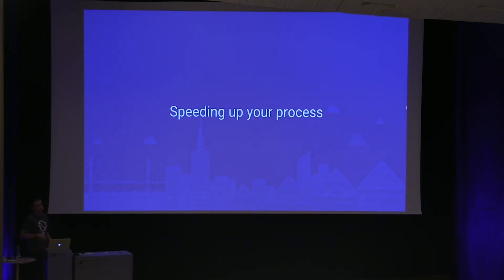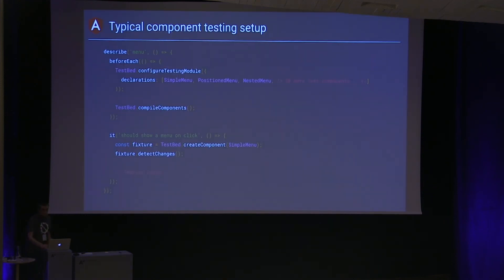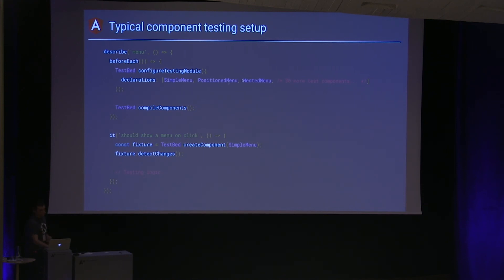I have a couple of tips for speeding up your testing process — things we discovered while working on Angular Material, where we write a lot of unit tests and run them on all supported browsers. We hit a barrier where we ran out of memory because it wasn't able to run all of these tests. In a typical material unit test setup, you define a bunch of test components in the beforeEach — a simple menu, a position menu, and maybe 30 more use cases — then compile them all. In each test you just create one component. But what this does is recompile all 30-something components for every unit test, even though you're only testing one of them.